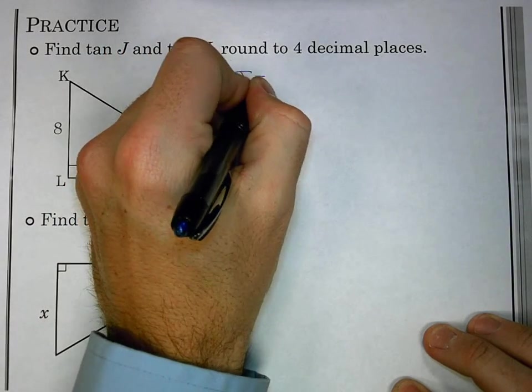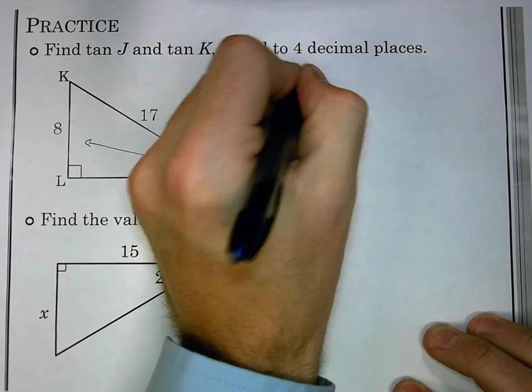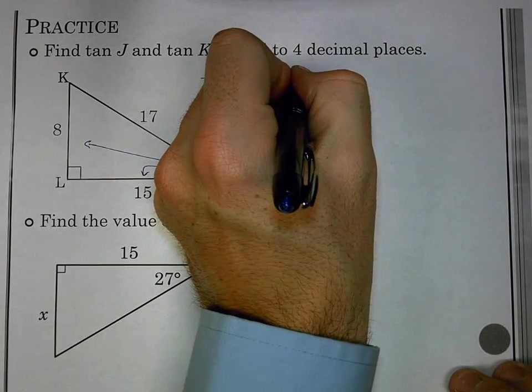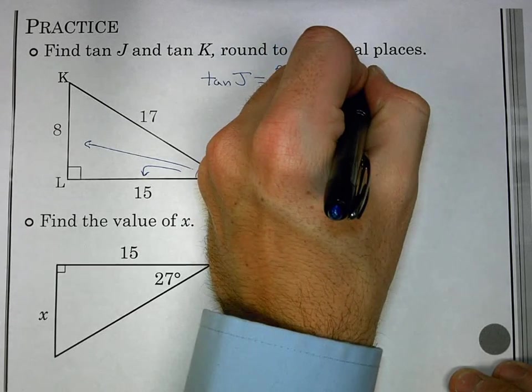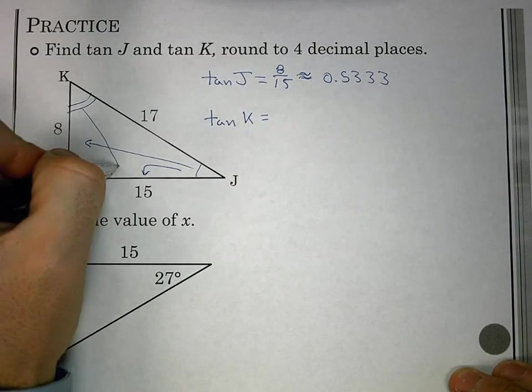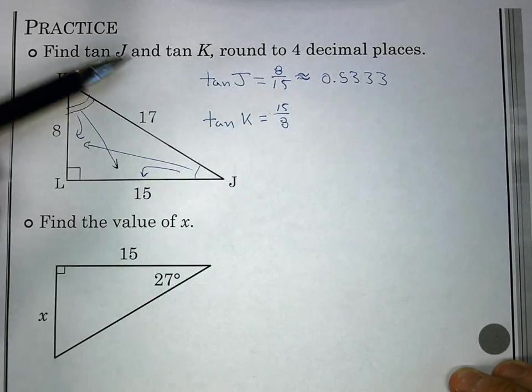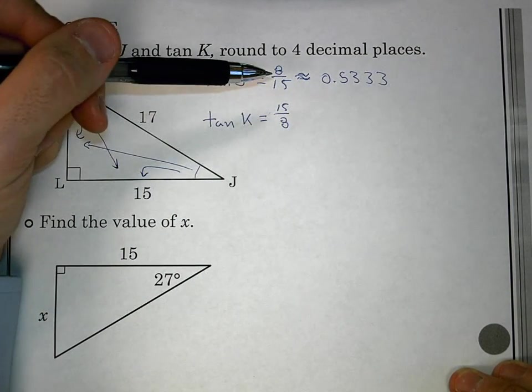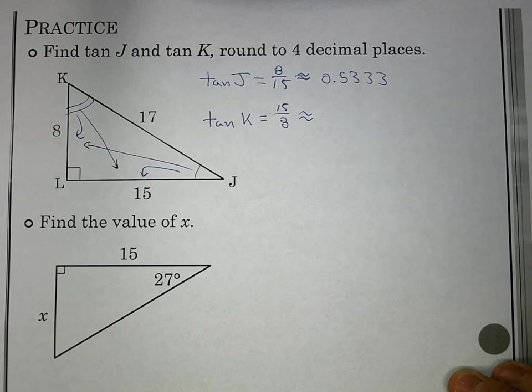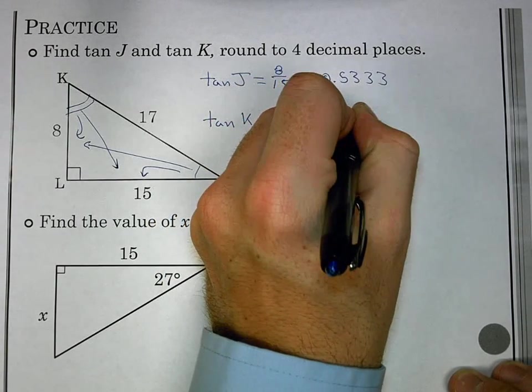First here I'm looking at tangent of J. Tangent of J is looking at the opposite, which is 8, over the adjacent, which is 15. I get 8 over 15. I can't reduce that fraction anymore, but I divide. 8 divided by 15 is about 0.5333. When I look at tangent of K, the opposite and adjacent of K will be 15 over 8, which is the reciprocal of it. 15 divided by 8, that actually is 1.875.